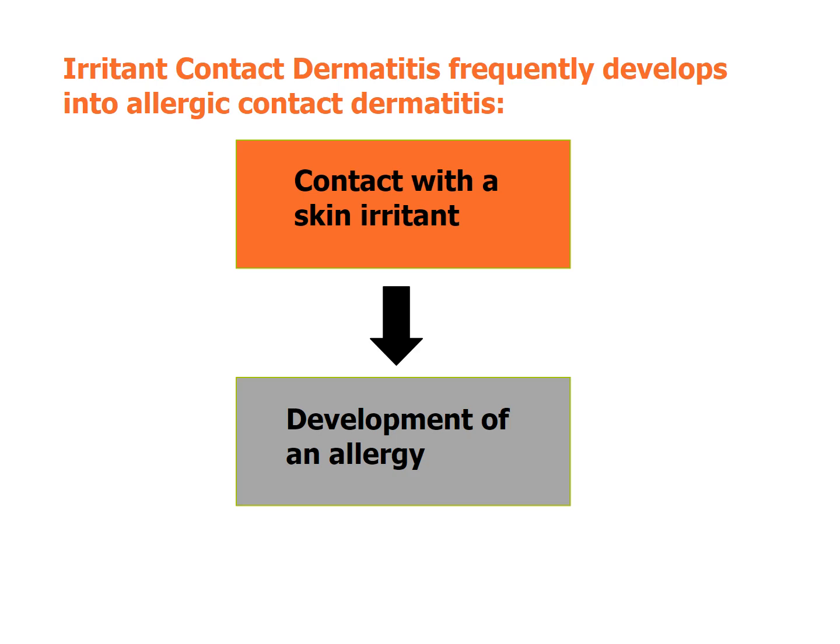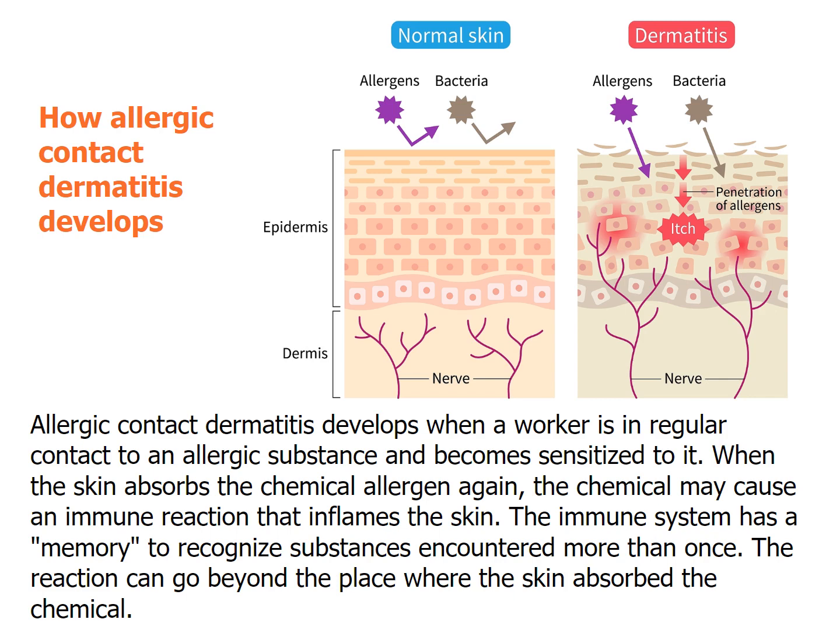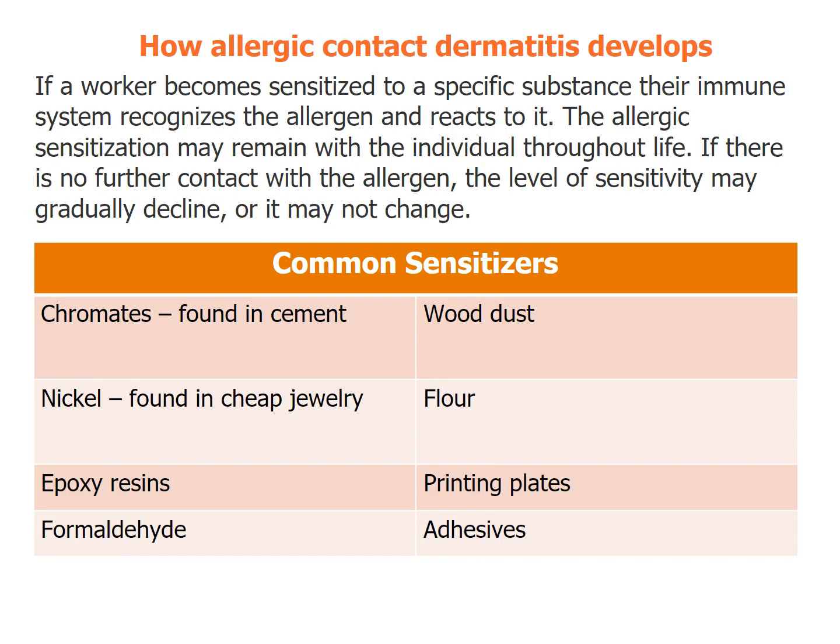Irritant contact dermatitis frequently develops into allergic contact dermatitis, which develops when a worker is in regular contact with an allergic substance and becomes sensitized to it. When the skin absorbs the chemical allergen again, it may cause an immune reaction that inflames the skin. The immune system has a memory to recognize substances encountered more than once, and the reaction can go beyond the place where the skin absorbed the chemical. If a worker becomes sensitized to a specific substance, their immune system recognizes the allergen and reacts to it. The allergic sensitization may remain with the individual throughout life, and if there is no further contact with the allergen, the level of sensitivity may gradually decline, or it may not change.